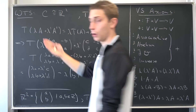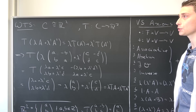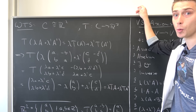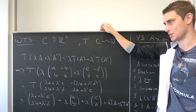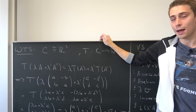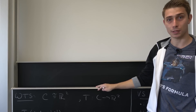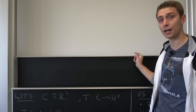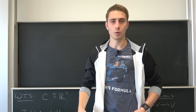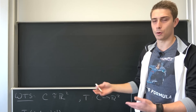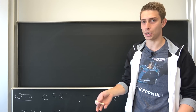We have shown this property — meaning we have a linear mapping, and overall at this point we have a vector space homomorphism. Now we want to get to the isomorphism. A homomorphism is an isomorphism if it's bijective — meaning it's both surjective and injective.